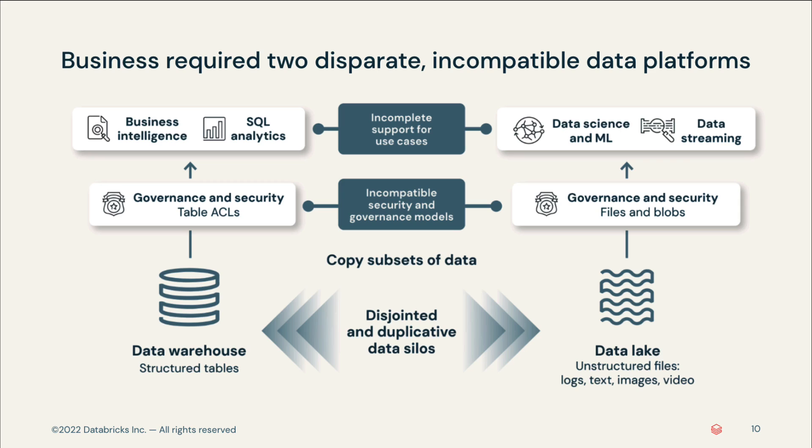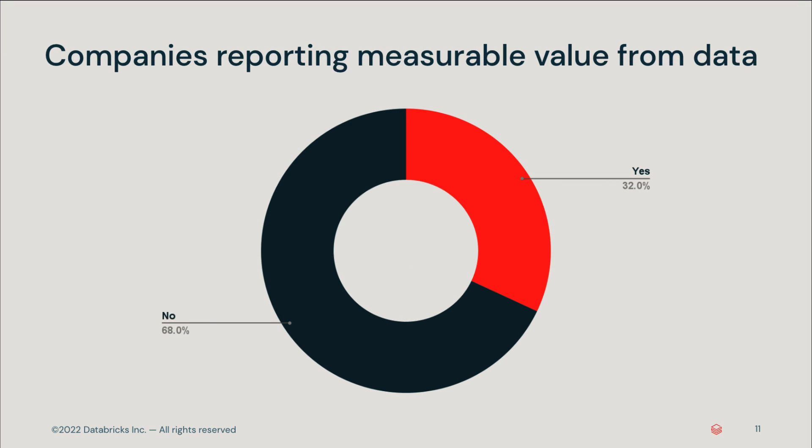With disjointed systems, successful AI implementation was difficult, and actionable outcomes required data from multiple places. The value behind the data was lost. In a recent study by Accenture, only 32% of companies reported measurable value from data. Something needed to change because businesses needed a single, flexible, high-performance system to support the ever-increasing use cases for data exploration, predictive modeling, and predictive analytics. Data teams needed systems to support data applications including SQL analytics, real-time analysis, data science, and machine learning.